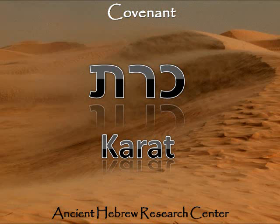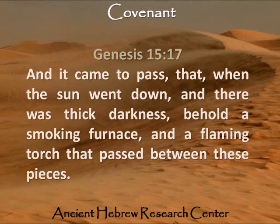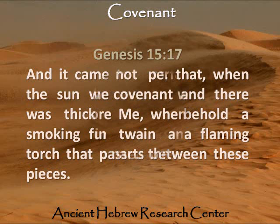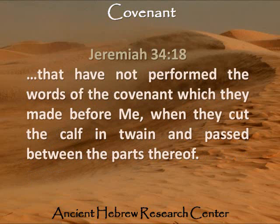When they did a covenant, what they would do is take an animal and cut it into two, and then they would pass through the pieces. You actually see this with Avraham when he takes the animal, cuts it into two pieces, puts them apart, and then the entity — the smoking fire pot — passes through these pieces. Jeremiah has a verse that explains what's going on: they're saying that if I violate this covenant, then you can do to me what we just did to this animal. That's how serious these covenants were — if you broke the covenant, they could literally cut you in two. That was the penalty for breaking the covenant.